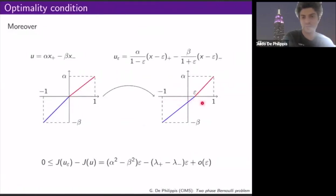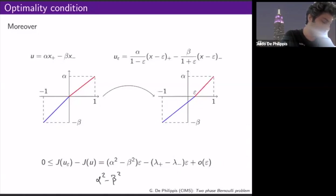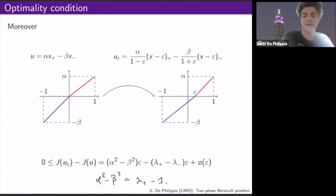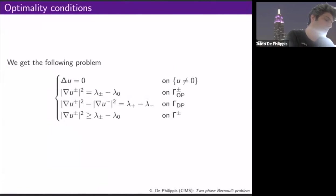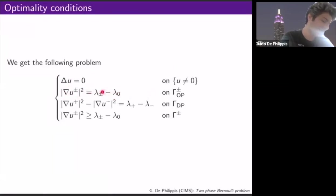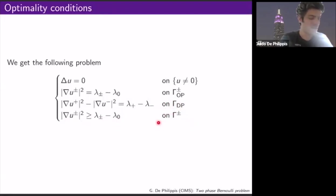There is another condition coming from moving the entire interface together, where epsilon can be both positive and negative. Expanding and sending epsilon to zero gives an equality — a transmission condition: the difference of the squared slopes equals lambda plus minus lambda minus. At a one-phase point, the slope squared equals lambda plus minus lambda zero. So the optimality conditions are: harmonic where U is non-zero, a Neumann-type condition on the boundary of the positive phase, a transmission condition on the two-phase boundary, and a global inequality.